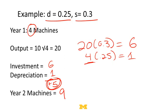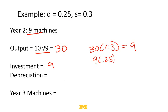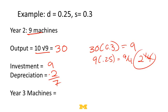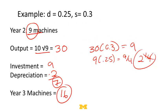Now we start year two with nine machines. Output is 10 × √9 = 30. We take 30 × 0.3, which is nine new machines we're going to buy. Depreciation: nine machines × 0.25 = 2.25 — let's simplify and call it two. So nine minus two is seven new machines, giving us a total of 16 machines. Our GDP was 20 the previous period, now it's 30 — we've got this nice sustained growth.